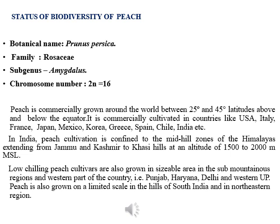It is commercially grown in the world between the latitudes of 25 and 45 degrees above and below the equator. Its commercial cultivation is done in countries like USA, Italy, France, Japan, Mexico, Korea, Greece, Spain, Chile, and India. In India, peach cultivation is confined to the mid-hill zones of the Himalayas extending from Jammu and Kashmir to Khasi hills at an altitude of 1500 to 2000 meters MSL.